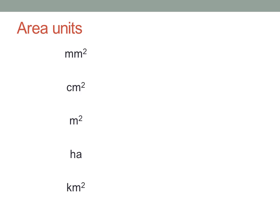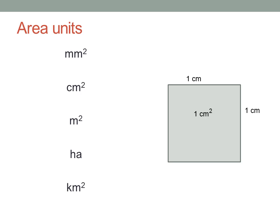Let me show you another trick to work this out correctly every time. Draw yourself a square. Label the square with the larger units on each side — one centimetre by one centimetre. So the area of the square is one square centimetre.